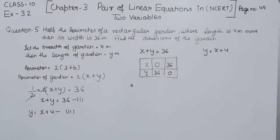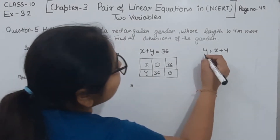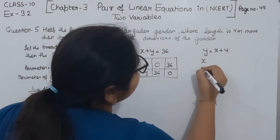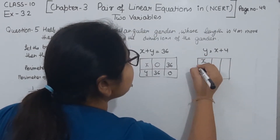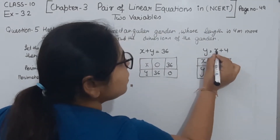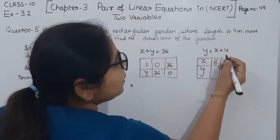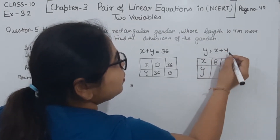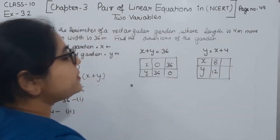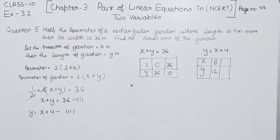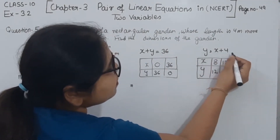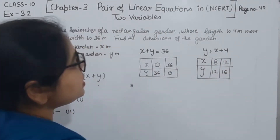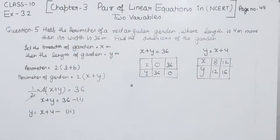Now for equation 2, y is equal to x plus 4, we are going to find two points. Taking x as equal to 8, y is equal to 8 plus 4, which is 12. Then taking x as equal to 12, y is equal to 12 plus 4, which is 16. So the two points for equation 2 are (8, 12) and (12, 16).